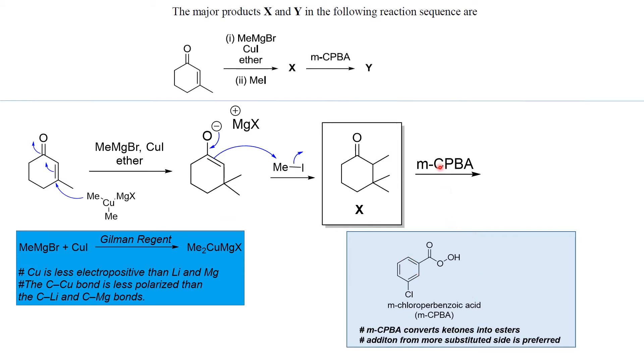So this is the product that we are going to get. The two things we need to remember are that methyl magnesium bromide or Gilman reagent gives 1,4 addition, because the carbon-copper bond is less polarized. Second thing is, addition of mCPBA always takes place from more substituted side.